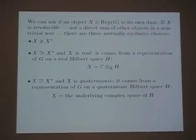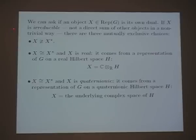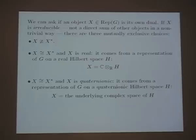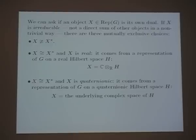Given the category of unitary representations of a group, you can ask: is an irreducible object isomorphic to its dual? It turns out there are exactly three choices: either it's not isomorphic to its dual, or it is — and if it is, it's either real or quaternionic. By 'real' I mean the complex Hilbert space is really the complexification of a representation on a real Hilbert space. By 'quaternionic' I mean it comes from a representation on a quaternionic Hilbert space, viewing those complex numbers by forgetting the extra quaternionic structure.